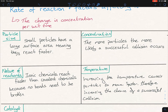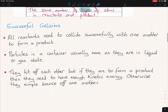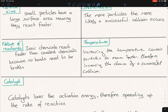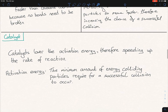Temperature: if we increase the temperature, this causes the particles to move faster, therefore increasing the chance of a successful collision. By heating up the particles, you're increasing their kinetic energy. And the more kinetic energy they have, the more likely they are to collide successfully. So increasing temperature causes particles to move faster, therefore greater kinetic energy, and more likely for a successful collision to take place.